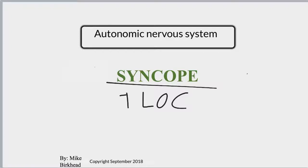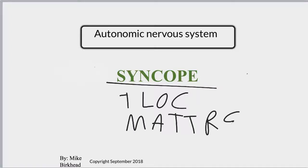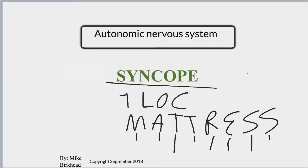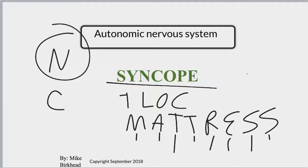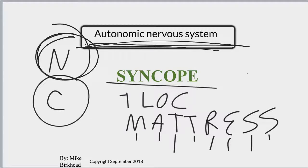The differential diagnosis for a transient loss of consciousness uses the mnemonic MATTRESS: metabolic, anaphylactic, toxic, trauma, ridiculous or psychogenic, exhaustion, seizure, and syncope. When comparing the nervous system versus the cardiovascular system, the nervous system gives you the prodrome called presyncope, while the cardiovascular system gives you an unexpected syncope without any warning. With that in mind, let's explore the autonomic nervous system causes of syncope. With the autonomic nervous system, you can have a decrease in the sympathetic nervous system — called orthostatic syncope — or an increase in the parasympathetic nervous system, called reflex syncope.